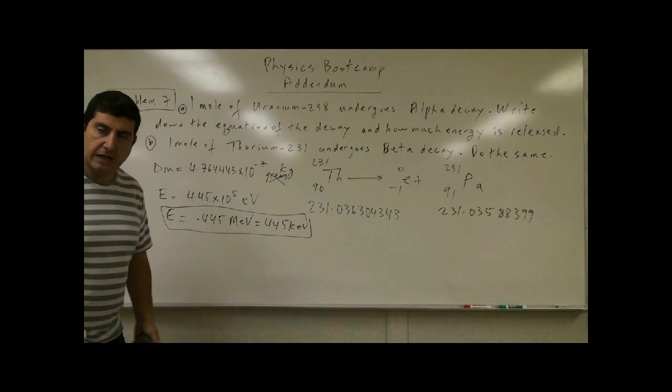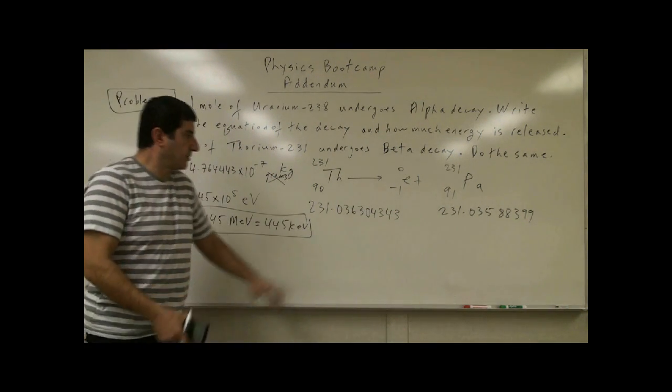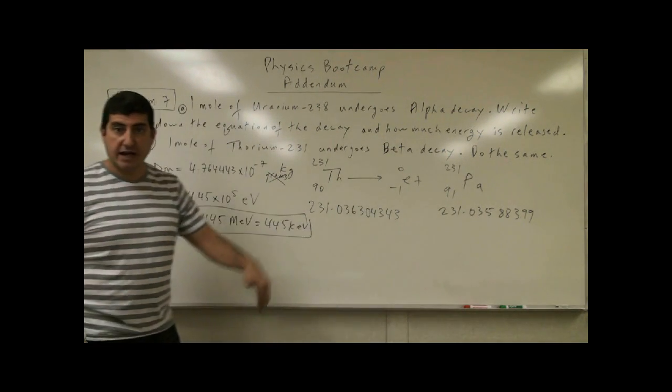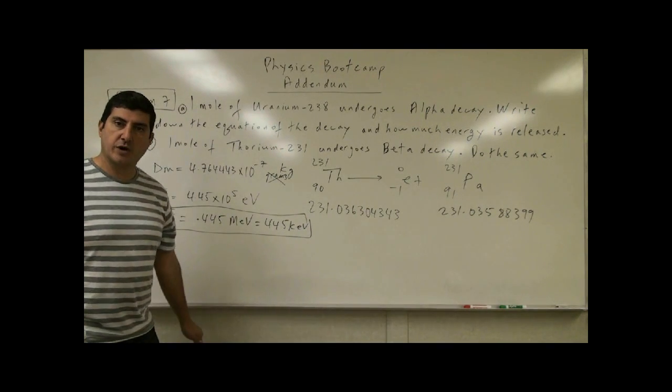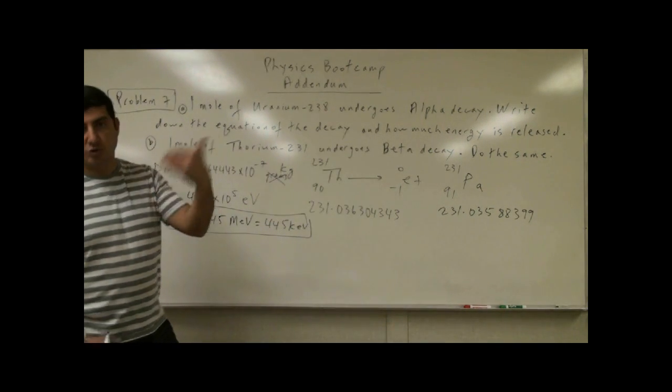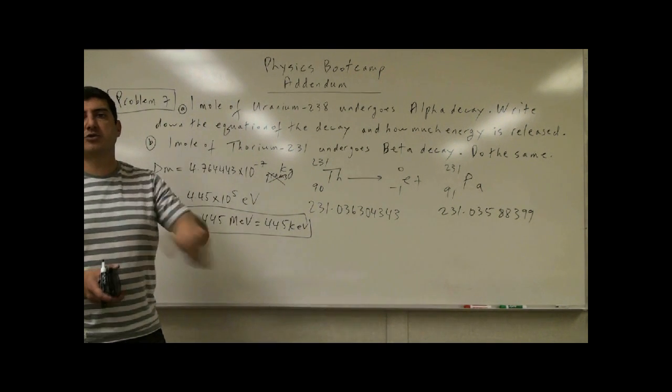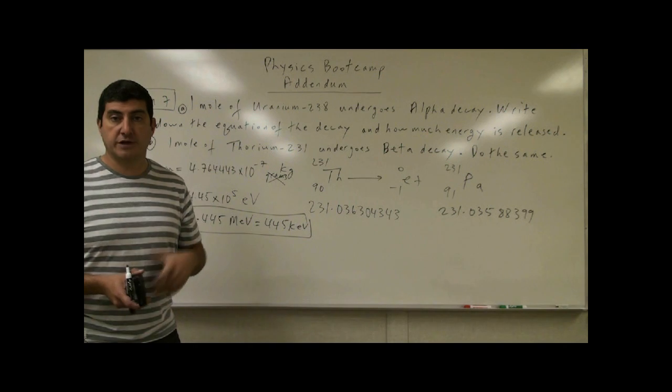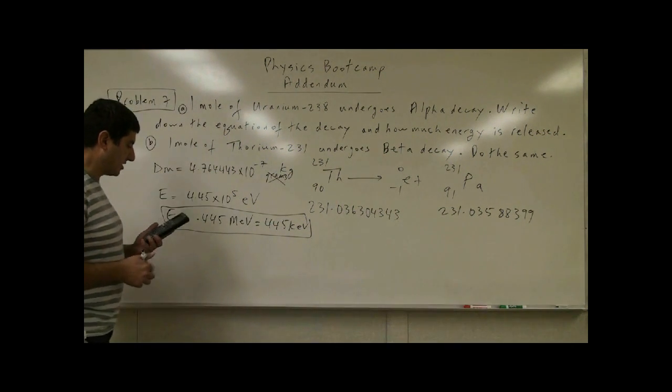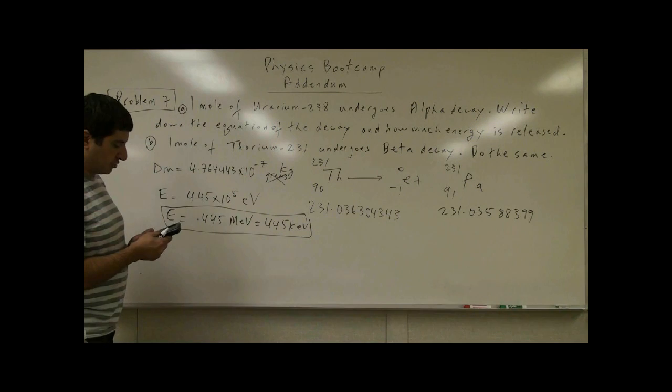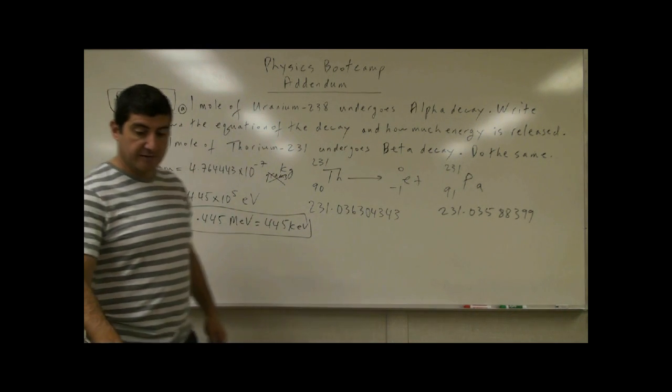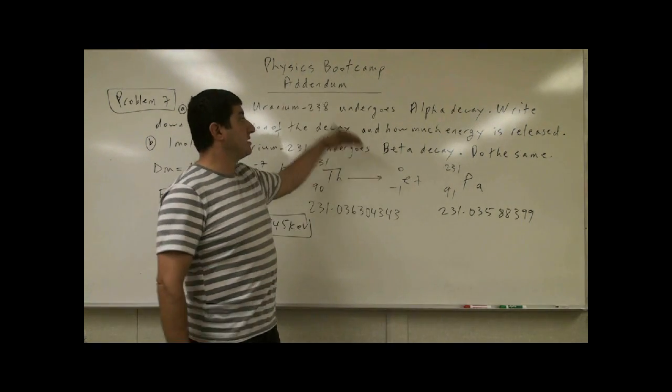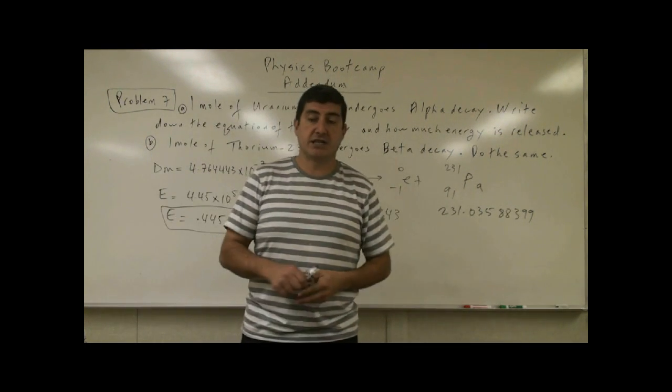I didn't write all of the steps down, but the steps are very similar. You subtract the masses, multiply it by the speed of light squared. Then if you want to convert to per atom, you divide by the Avogadro's number, and then you also divide by the conversion between a joule and an electron volt. So now you can see how to do these kind of decay calculations, whether it be beta decay, alpha decay, or any other kind of decay.